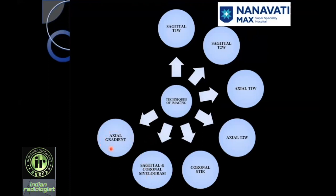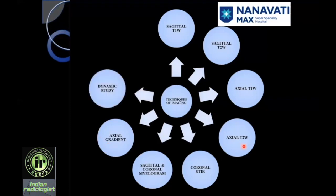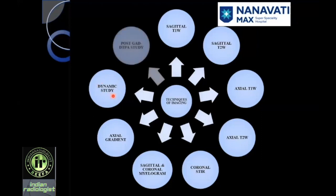Axial gradient echo replaces Axial T2 in the cervical spine. A lot of people who have undergone lumbar disc disease suffer from post-operative listhesis, which is best seen in flexion and extension studies. So a fast T2 sequence in flexion and extension in addition to neutral position is also useful in post-operative spine. At the atlanto-axial junction when you are looking for atlanto-axial stability, instability, or subluxations, a flexion extension in dynamic mode is a necessity. The slice thickness there is 3 to 4 mm.